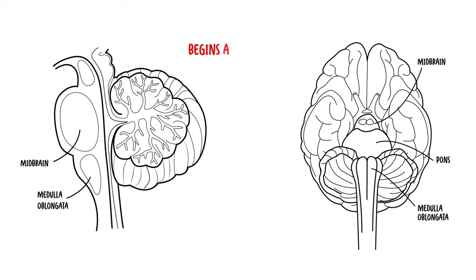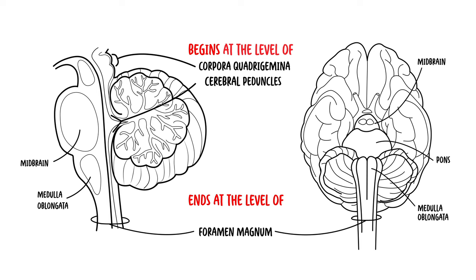The brainstem begins at the level of the cerebral peduncles anteriorly, and the corpora quadrigemina, quadrigeminal plate and tectal plate posteriorly. It ends at the level of the foramen magnum of the skull, at the decussation of the pyramids.